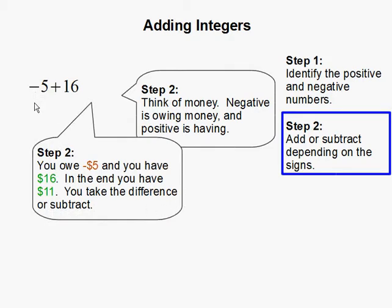So negative 5 means you owe $5, and positive 16 means you have $16. So in the end, you're going to have $11 because you have more than you owe. And in order to get 11, you just take 16 and subtract 5.